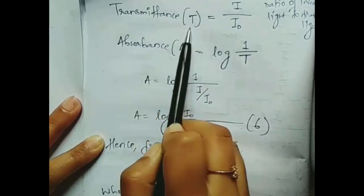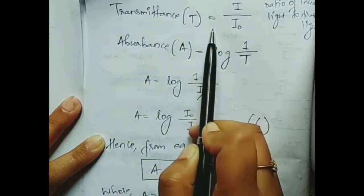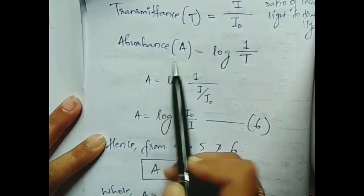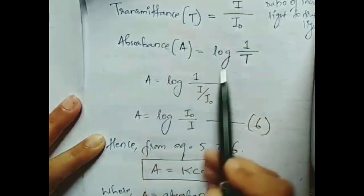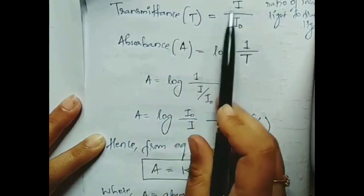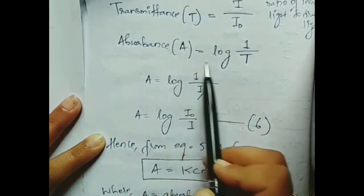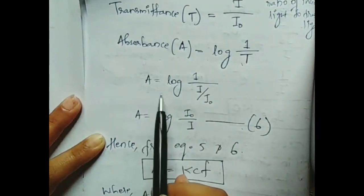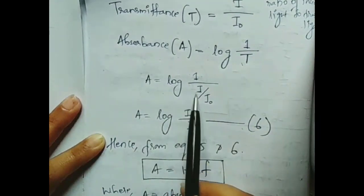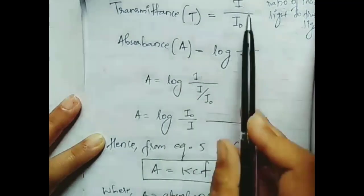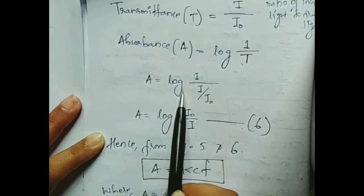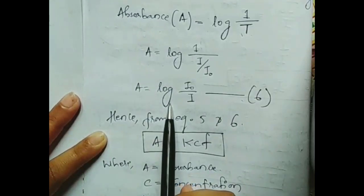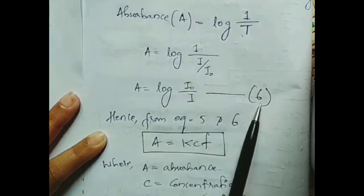Now, transmittance is the ratio of transmitted light to incident light, so T equals I by I naught. Absorbance A equals log(1/T). Putting in the value of transmittance: A equals log(1 divided by I/I naught), which gives A equals log(I naught / I). This is equation 6.